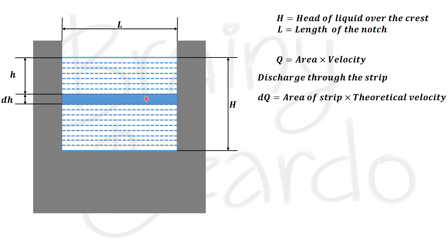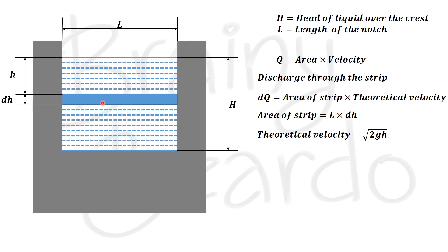The area of the strip is rectangular, so it equals L into dH. The theoretical velocity is based on the height of the fluid, so the theoretical velocity V equals root of 2gh. Substituting this area and velocity into the dq equation, we get dq equals L into dH into root of 2gh. We call this equation number 1, giving us the discharge through this small strip.